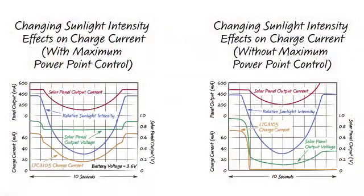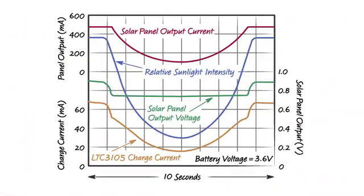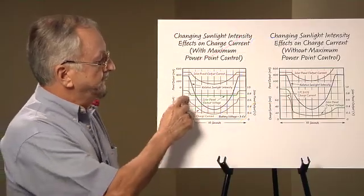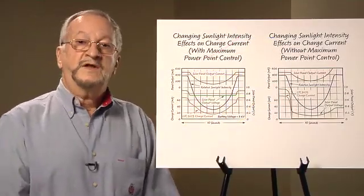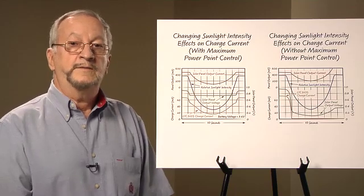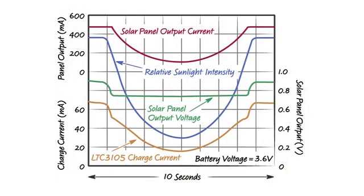The graph on the left shows the output voltage and current for a two-cell solar panel as the sunlight intensity changes from 100% down to 20% then back up to 100%. This could be similar to a cloud passing overhead. Also included in this graph is the output current of the LTC 3105 that is charging the lithium-ion battery. Note that as the sunlight intensity drops about 10%, the solar panel's output voltage and current also drop. But the LTC 3105 maximum power point control prevents the panel's voltage from dropping below the programmed 750 millivolts.